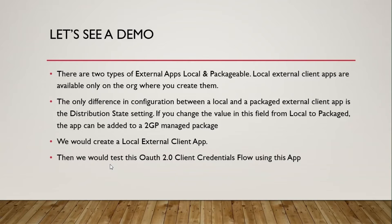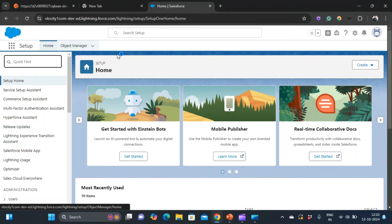Now we'll see a demo. There are two types of external apps: local and packageable. Local external client apps are available only on the org where you create them. The only difference in configuration between a local and a packaged external client app is the distribution state setting. If you change the value in this field from local to packaged, the app can be added to a second generation managed package. In this demo, we'll create a local external client app and then test the OAuth 2.0 client credentials flow using the app.